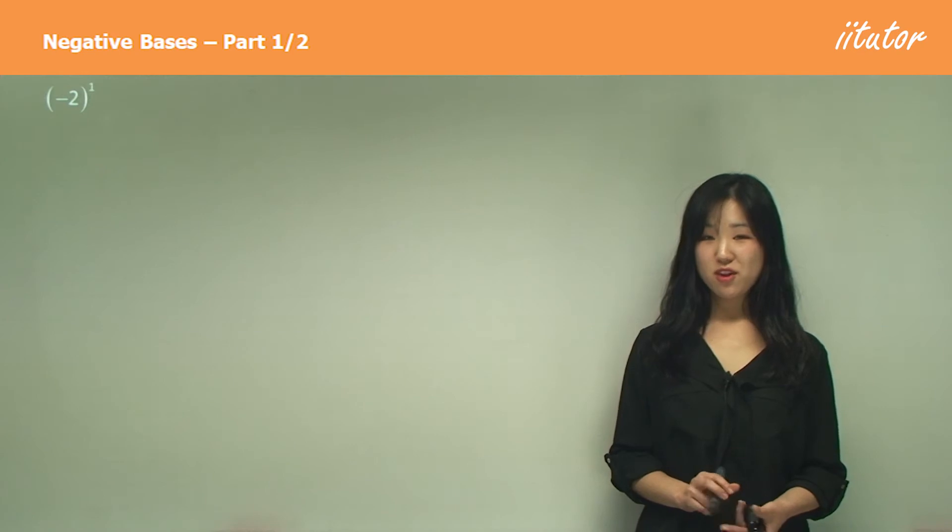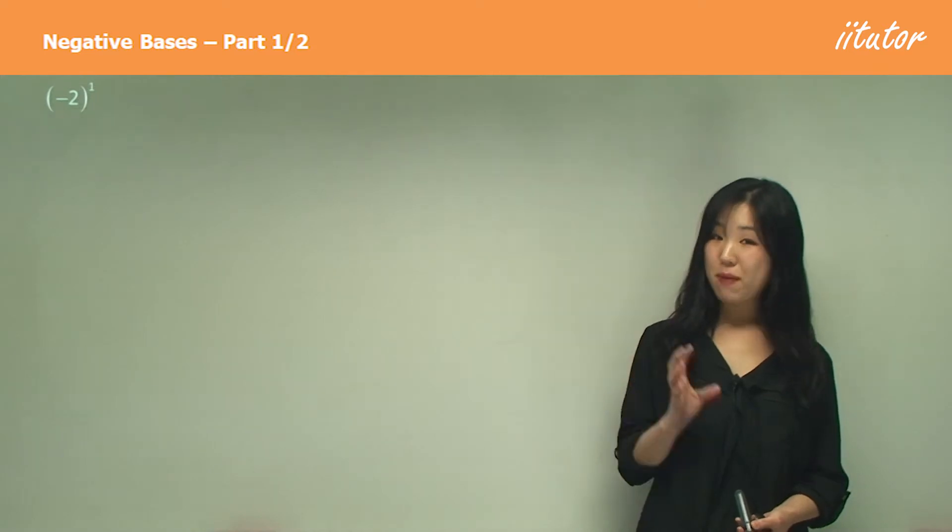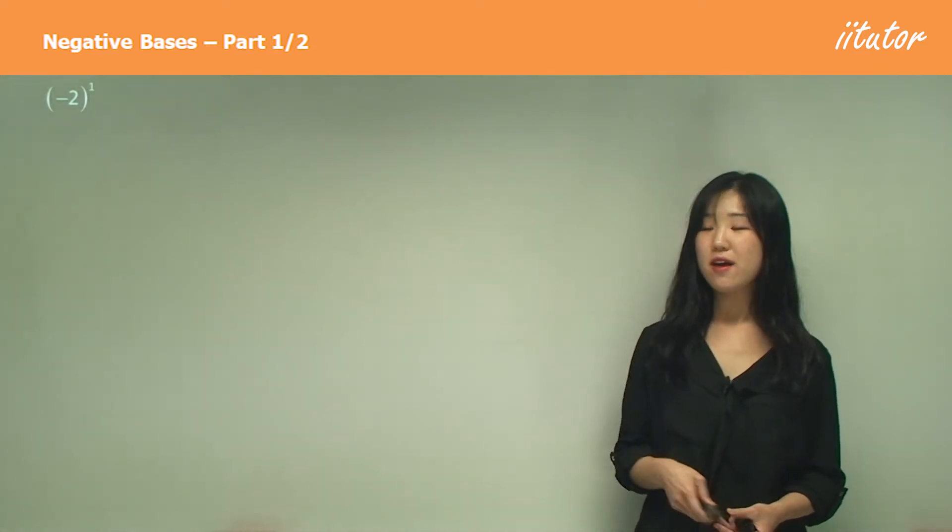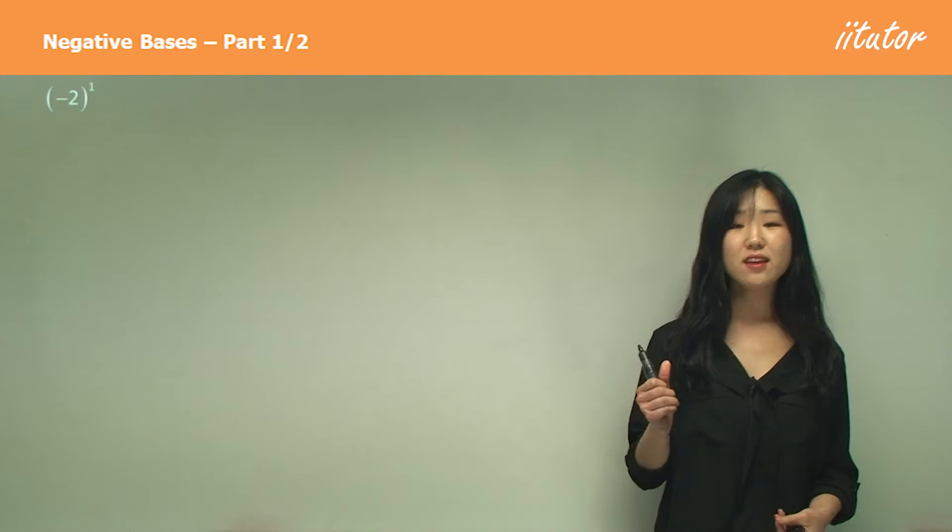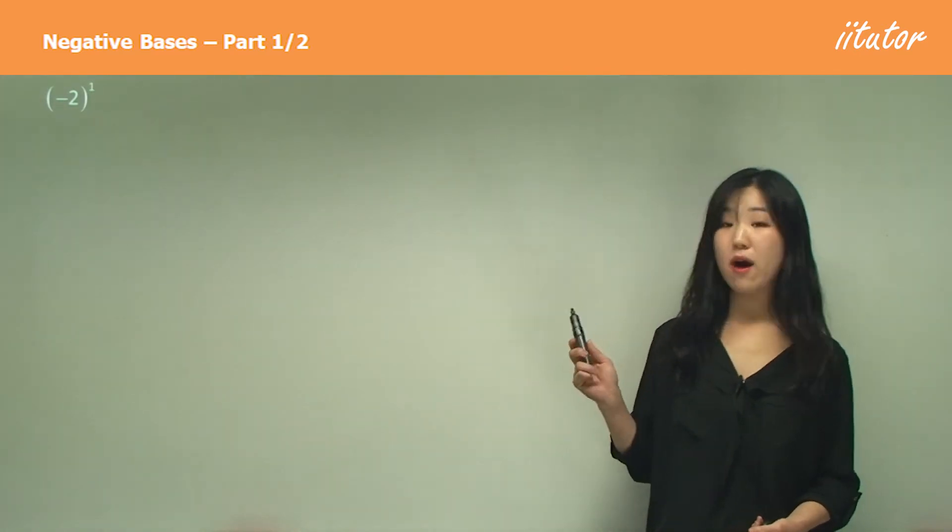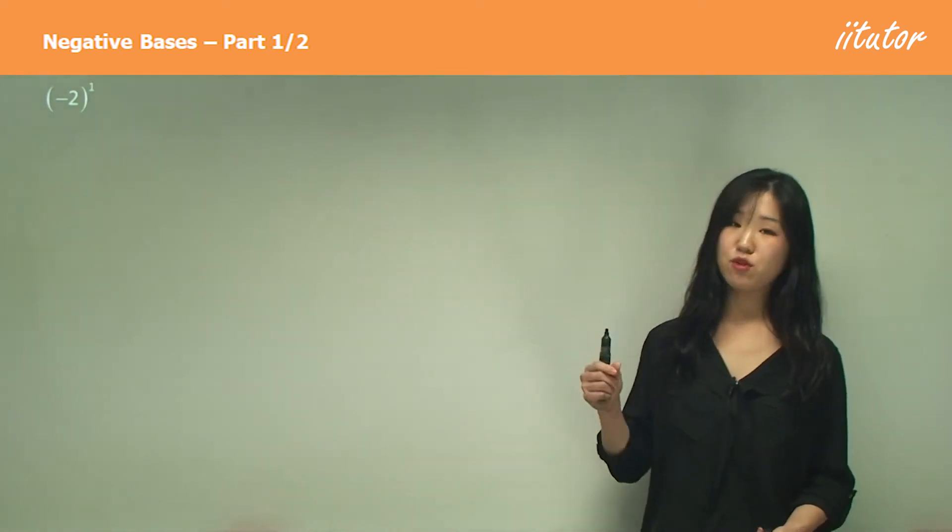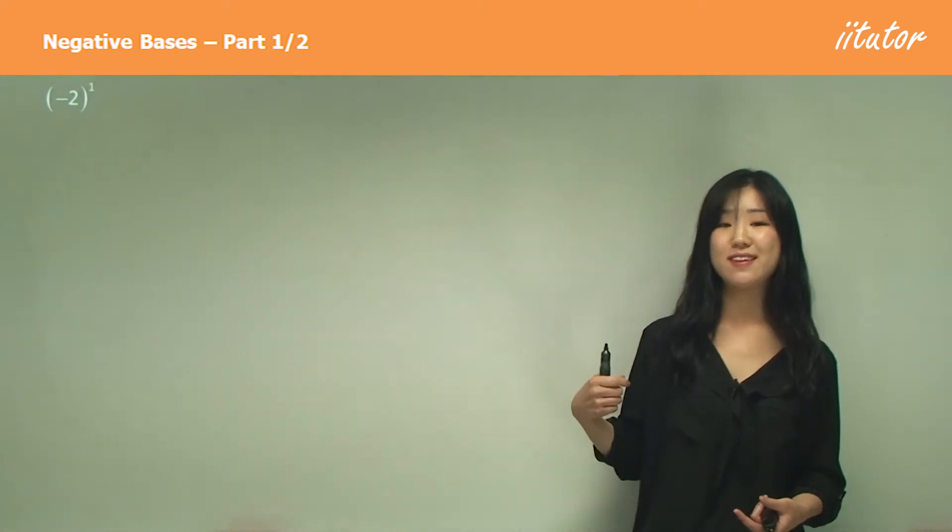Now we're going to be doing some exponent notation with negative bases. So we're going to be looking at some indices that have a base of a negative number. As you can see over here, we have negative 2 and it's power of 1. The power 1, we call it the index, and the base is going to be the negative 2 which is on the bottom of the index.